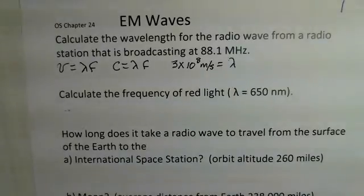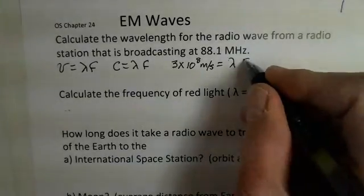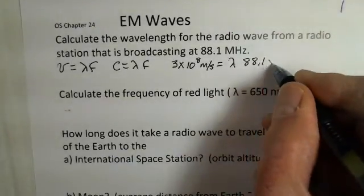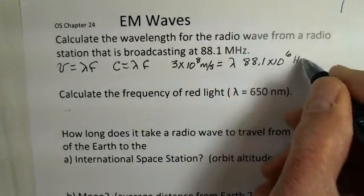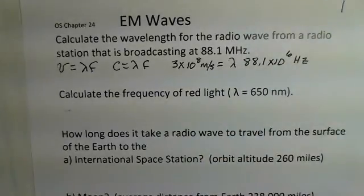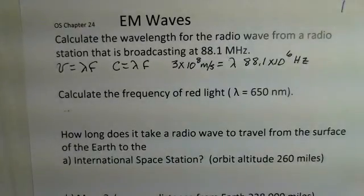Lambda is our wavelength symbol. So we put in 88.1. I replace mega with 10 to the sixth. And hertz is our unit of frequency, our standard metric unit of frequency. So we're going to divide 3 times 10 to the eighth by 88.1 times 10 to the sixth.